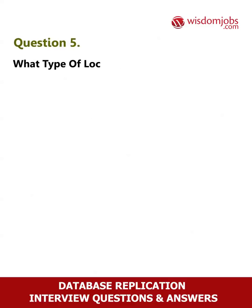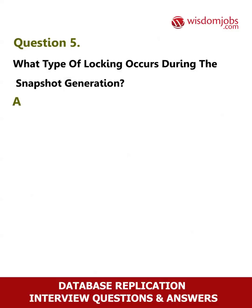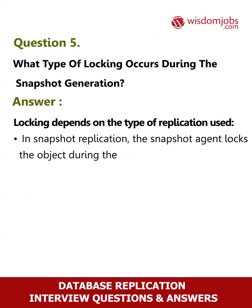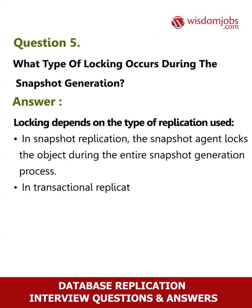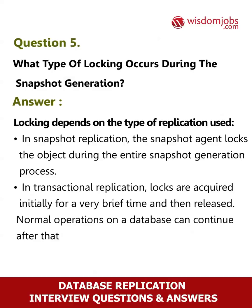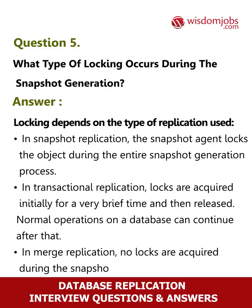Question 5: What type of locking occurs during snapshot generation? Locking depends on the type of replication used. In snapshot replication, the Snapshot Agent locks the object during the entire snapshot generation process. In transactional replication, locks are acquired initially for a very brief time and then released, so normal operations on the database can continue after that. In merge replication, no locks are acquired during the snapshot generation process.